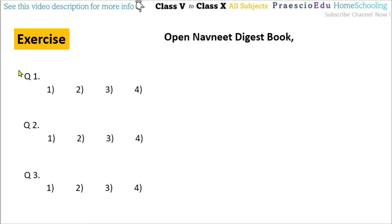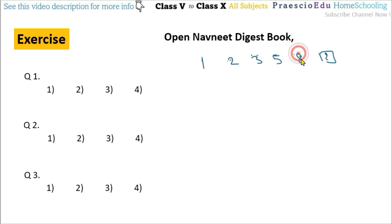Now in exercise question number 1: which of the given alternatives will complete the following pattern? The sequence is 1, 2, 3, 5, 8, and then a question mark. From 1 to 2 there is a difference of 1; from 2 to 3 we add 2. You add the previous number to get the next: 8 plus 5 equals 13. So 13 is the answer, given in option number 3.